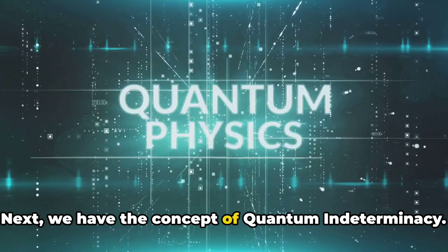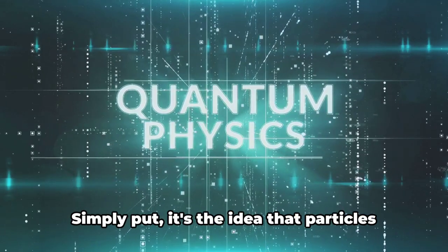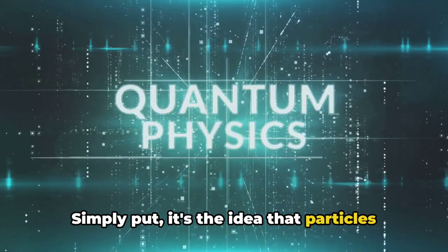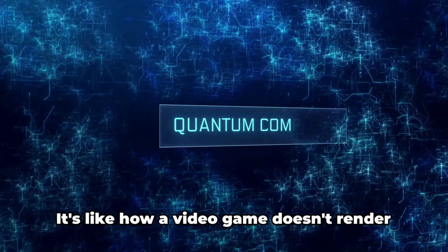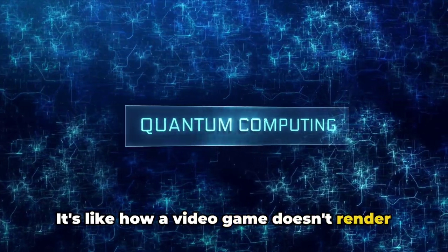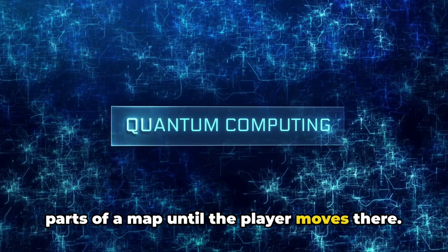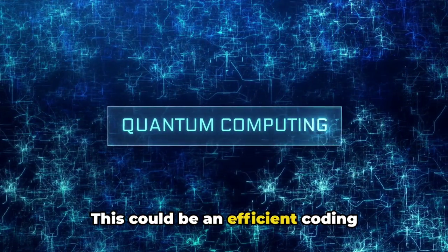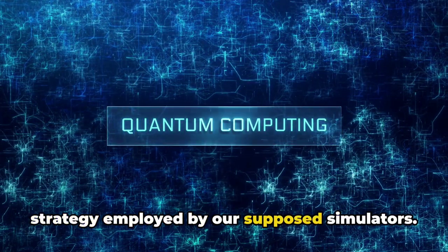Next, we have the concept of quantum indeterminacy. Simply put, it's the idea that particles exist in multiple states until they're observed. It's like how a video game doesn't render parts of a map until the player moves there. This could be an efficient coding strategy employed by our supposed simulators.